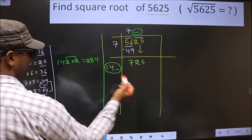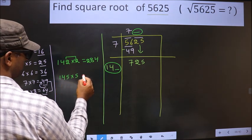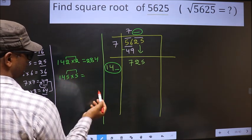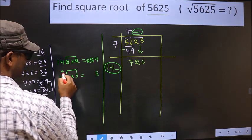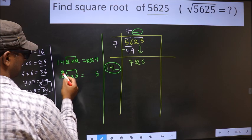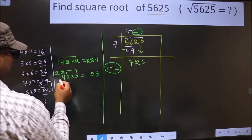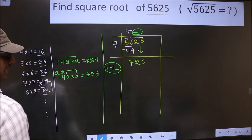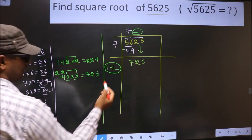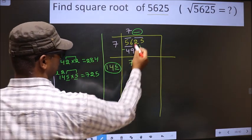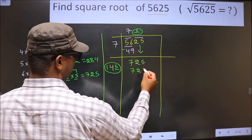Here, let us check with 5. So 145 × 5. These two numbers should be same. 5 × 5 is 25, carry 2. 5 × 4 is 20 plus 2 is 22. 5 × 1 is 5, plus 2 is 7. We got exact 725 for the number 5. So we take 5 here and here. We get 725 here.